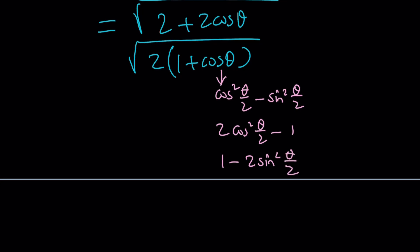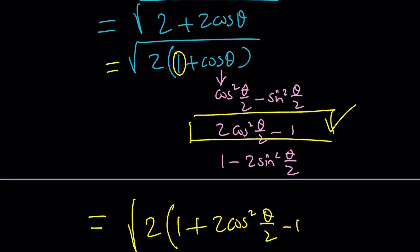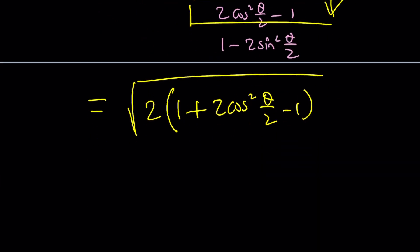Which one am I going to use? Since we have a one here, I want to use the one with the negative one, which is this one, so that the ones cancel out. Get it? Great. Now let's see. Two times the quantity one plus cosine theta, I'm going to replace it with two cosine squared theta over two minus one. And then this cancels out nicely.